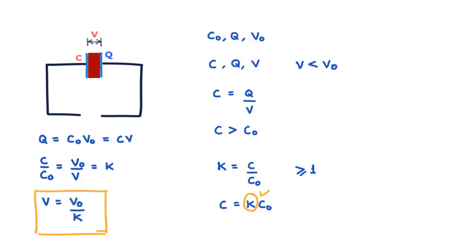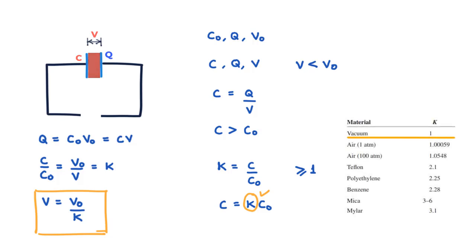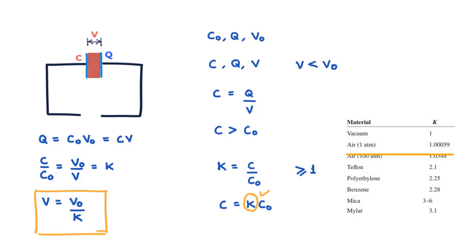The value of K for vacuum is by definition 1. The K value for air is not very different from vacuum, but for mylar the K value is 3.1, which means that if you put a mylar layer between the plates, for a given charge on the plate the capacitance will go up by a factor of 3.1.